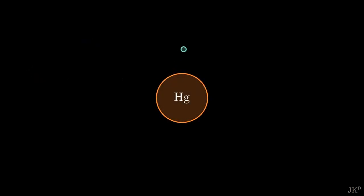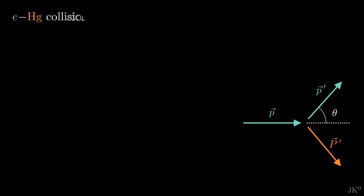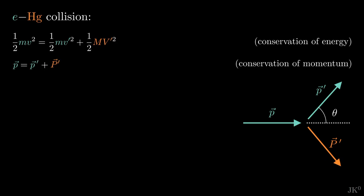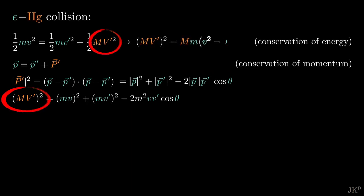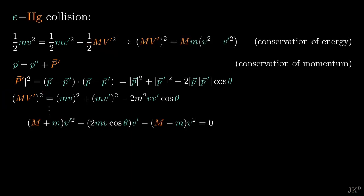Let's now consider the collision between one of these fast electrons and a mercury atom. Conservation of energy and momentum can be used to determine the speed of each particle after the collision. Solving for the atom's momentum uppercase P prime in terms of the electron's momentum P, and taking its square, we find this relation, where theta is the angle between the electron's momentum before and after the collision. We can find the term on the left hand side from the energy conservation relation. Plugging it here, we get a quadratic equation.